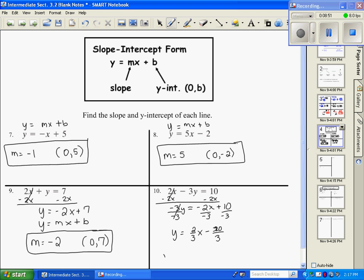So my slope, my m is 2 thirds. And my y intercept is 0, negative 10 thirds. So once you solve for y, it's just recognizing and naming your slope and your y intercept.